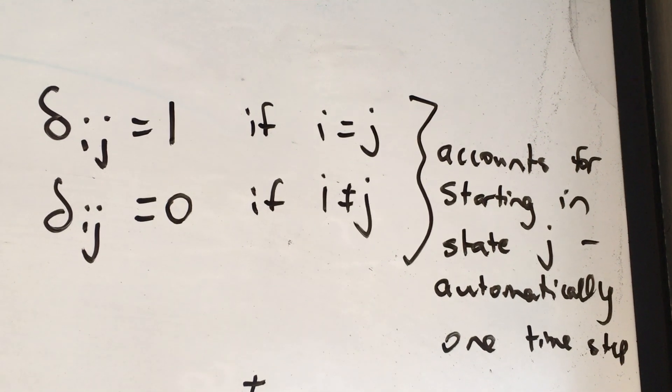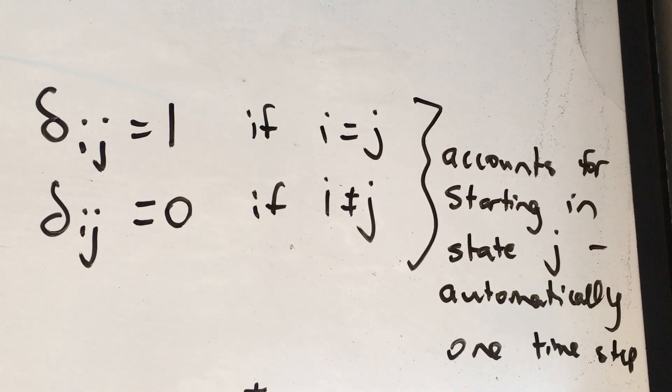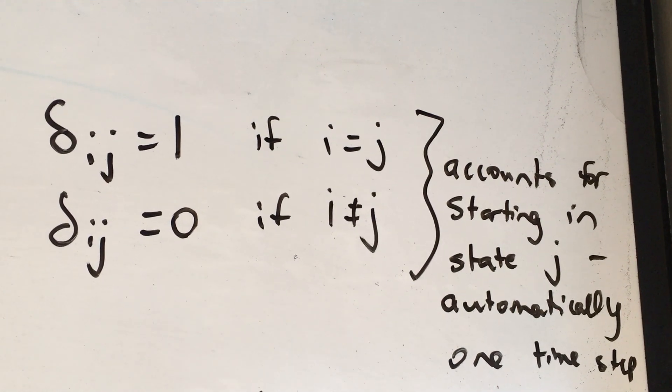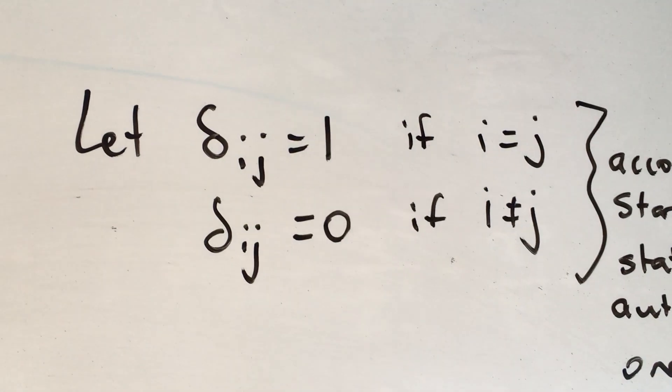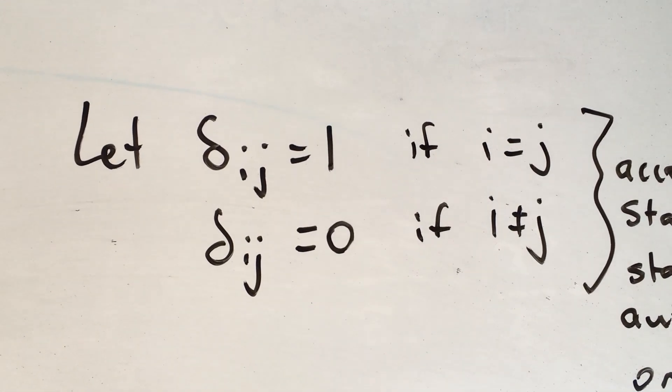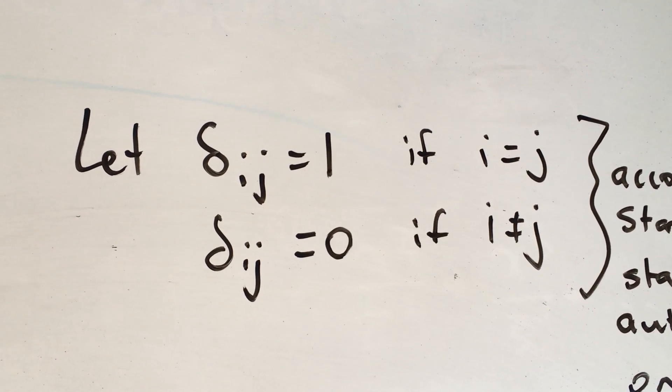So like I said, you automatically score yourself one time sub expected in that state in state J if you also started in that same state. Okay, so delta IJ is one if I and J are the same, zero if I is not J. Make a special note of that.